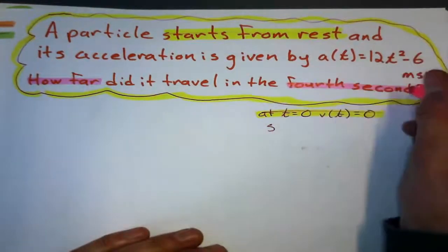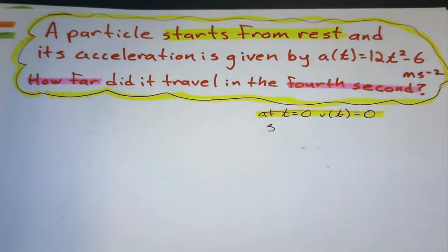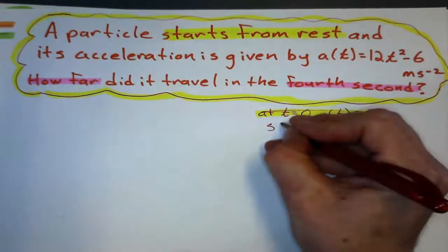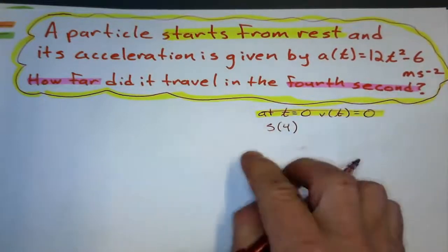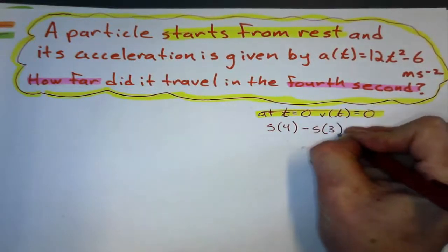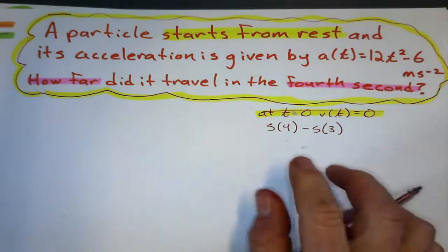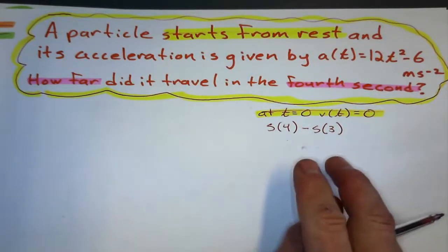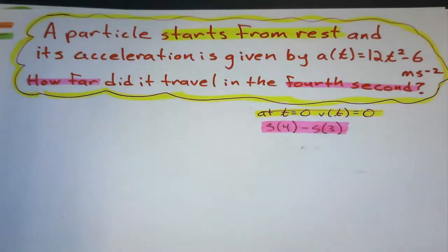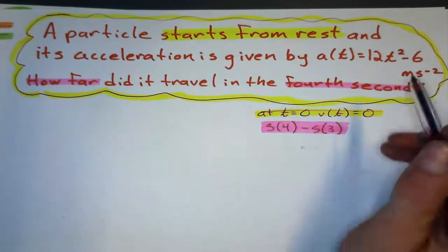In the fourth second — if it's accelerating, it's going to be doing a different distance each second, so it won't be constant. What 'in the fourth second' means is: it's going to be the displacement after four seconds minus the displacement after three seconds. That's how much it has traveled in the fourth second — kind of a tricky way to say that.